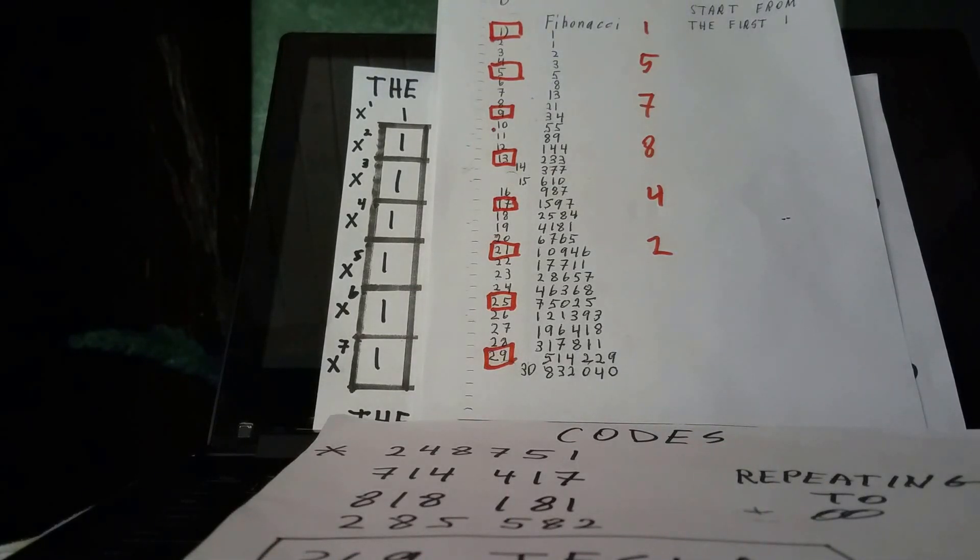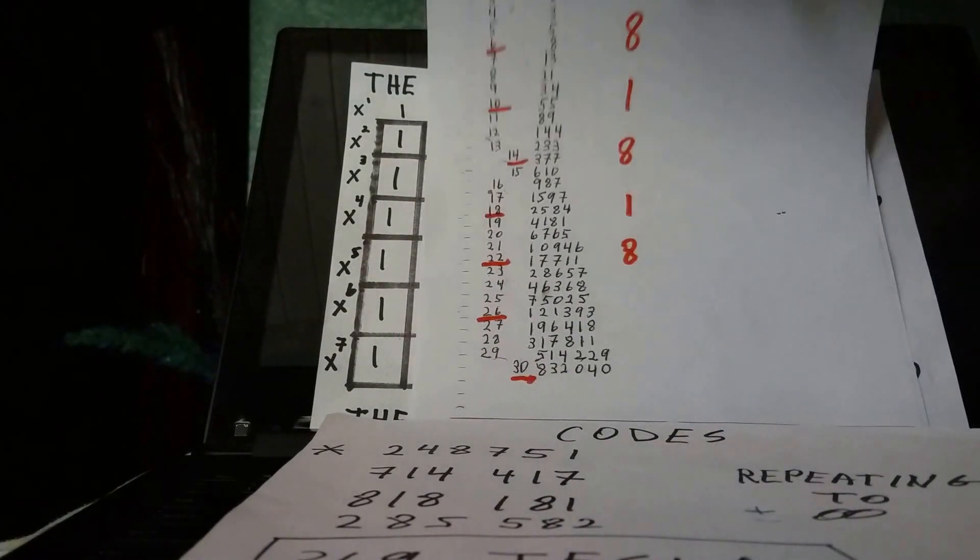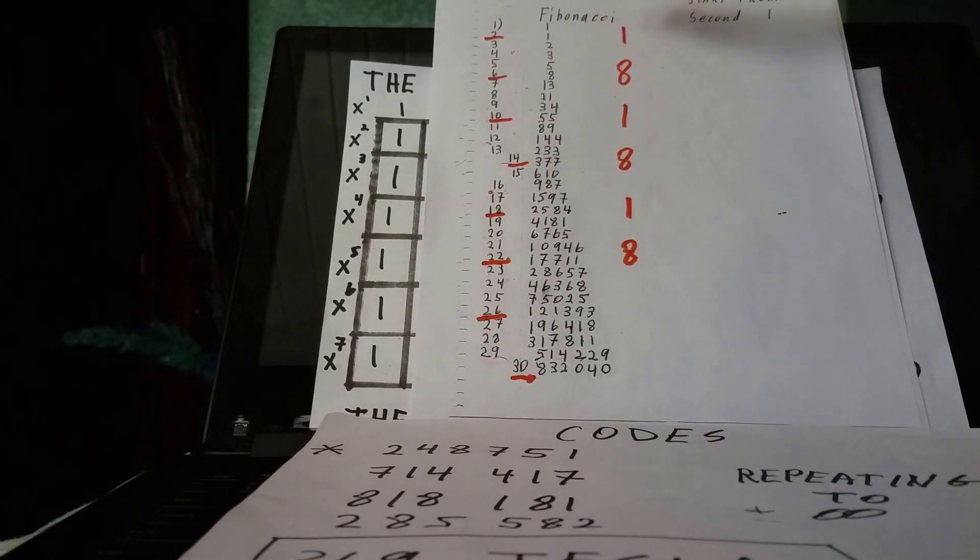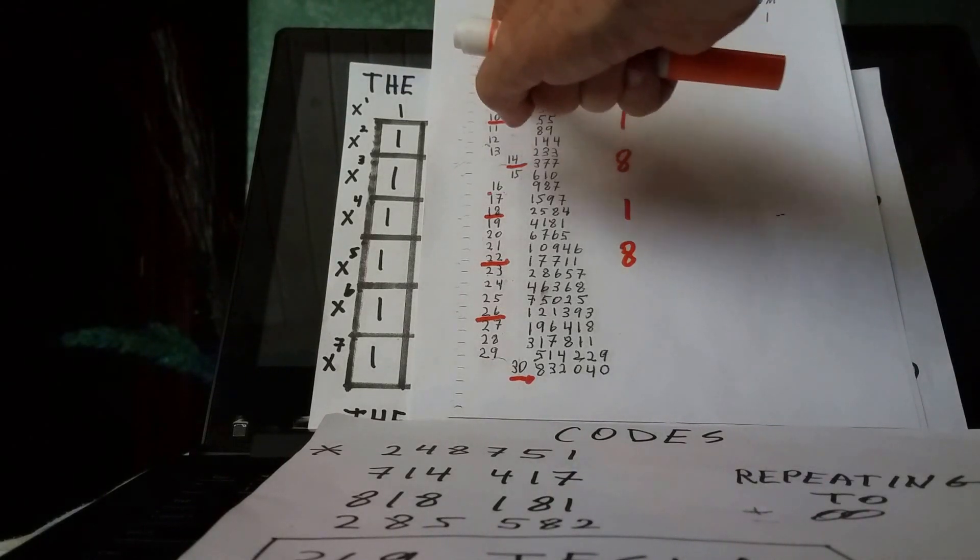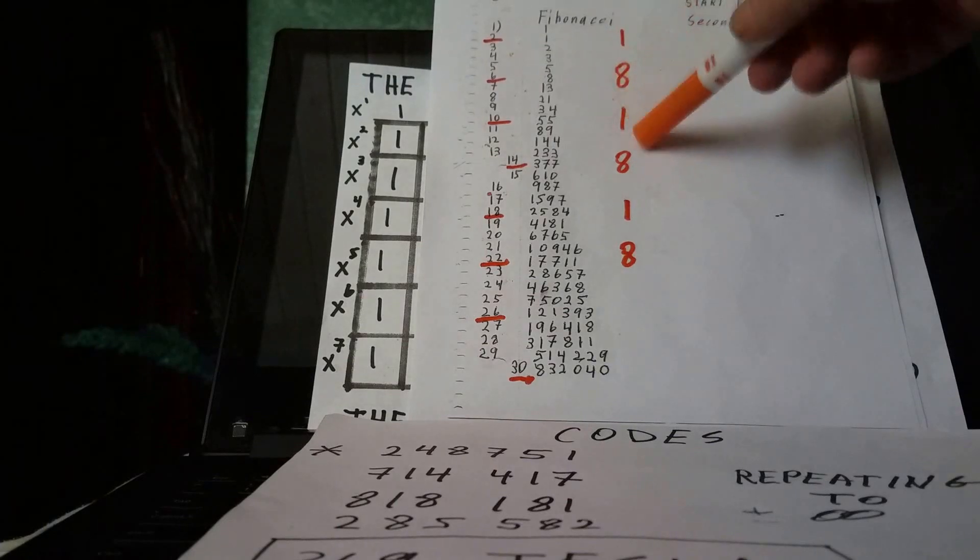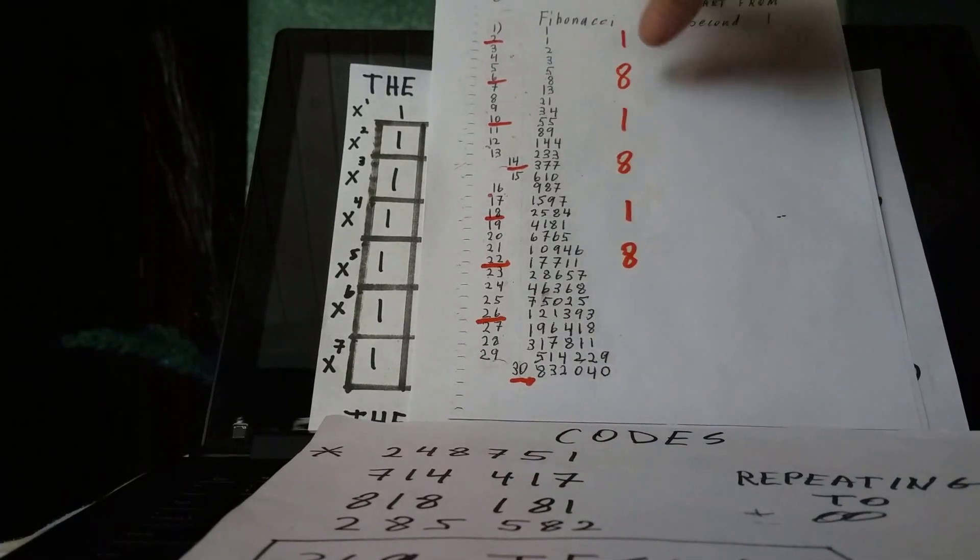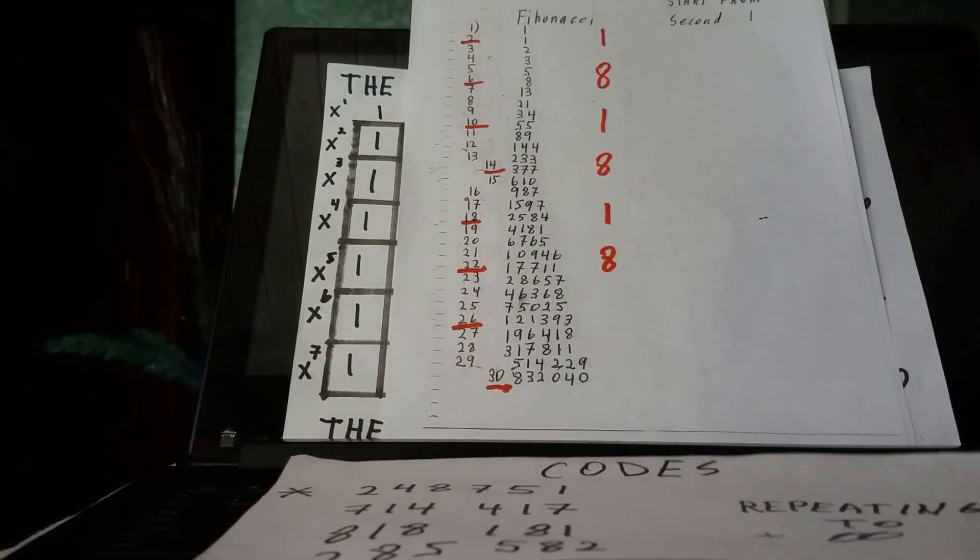If we were to start from the second one in the Fibonacci series, we will come up with the code using those intervals, 1, 2, 3, bang, 1, 2, 3, bang, 1, 8, 1, 8, 1, 8. Just to verify, 1, 8, 1, 8, 1, 8.